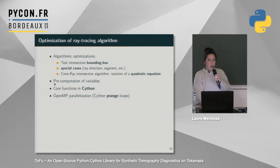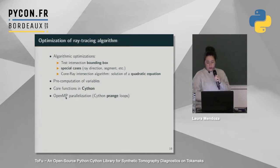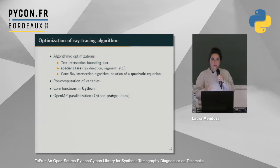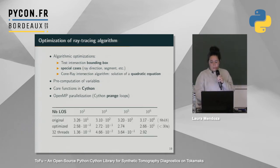To optimize the ray-tracing algorithm, first you must make the algorithm mathematically optimal before optimizing the code. Before computing cone-ray intersections, we first compute whether a ray intersects the bounding volume of the whole structure. We also treat special cases for the ray and for the structure to simplify mathematically and reduce computations. In the worst case scenario, computing the intersection between n cones and n rays is just solving n quadratic equations — not so complicated. Other key points: pre-computing variables, putting all core functions in Cython, and using Cython's prange loops for parallelization with OpenMP.